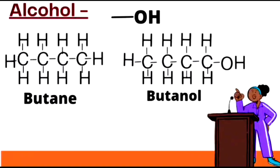The next group is the OH group, which is called the alcohol group. Here is butane as an example. Butane has 4 carbon atoms. The OH group replaces a hydrogen atom and attaches to the butane chain, and the new compound formed is called butanol.